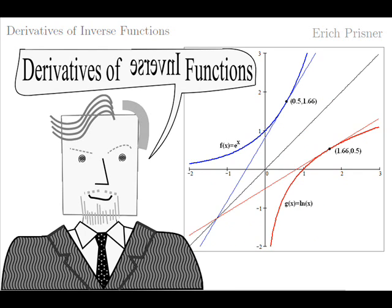Since the derivative is defined geometrically as the slope of the tangent line to the graph of a function at a given point, and since there is a relationship between the graphs of inverse functions — one is obtained from the other by flipping, reflecting at the curve y equals x — you may ask: is there a relationship between derivatives of inverse functions? The answer is yes, and this relationship can spare us a lot of work with the limit definition of the derivative.